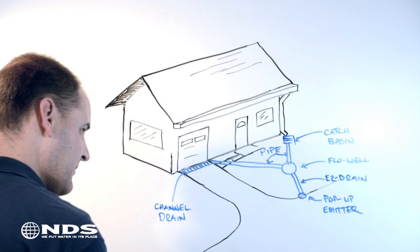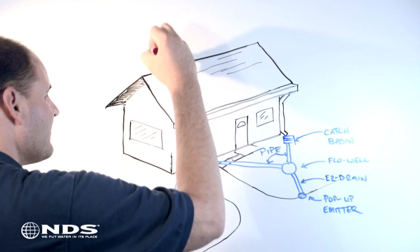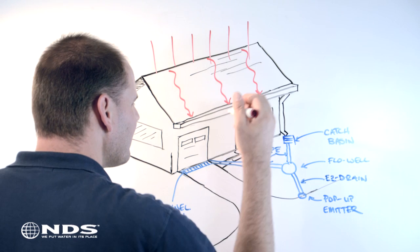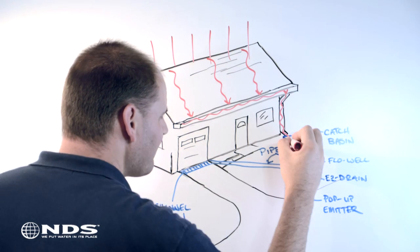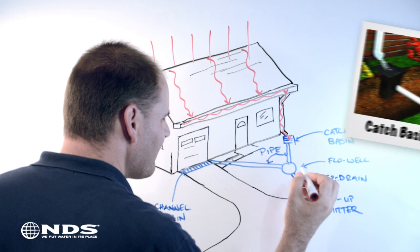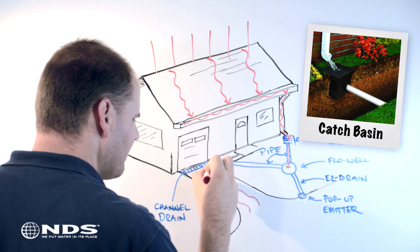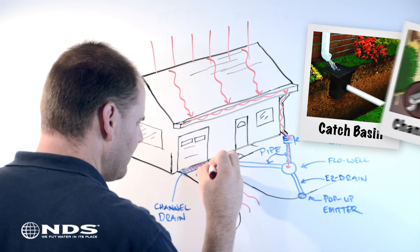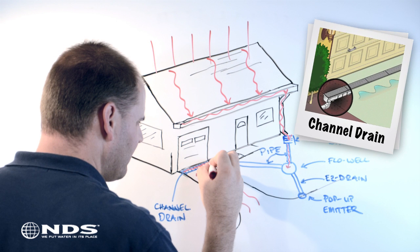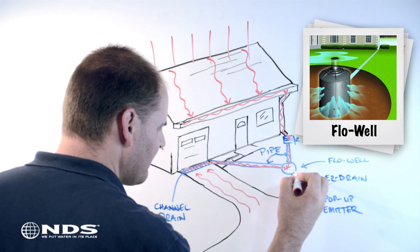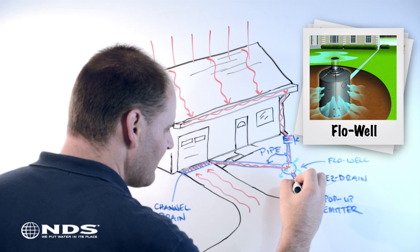Now that the drainage products are installed and the rain falls, it once again drains to the rain gutter and is carried to the downspout. Instead of draining to the ground, the water is now collected in a catch basin where it is piped away from the house. Water that falls in the driveway is caught in a channel drain before it can get into the garage. The catch basin and channel drain both drain to a flow well, which allows water to drain back into the ground a safe distance from your home.